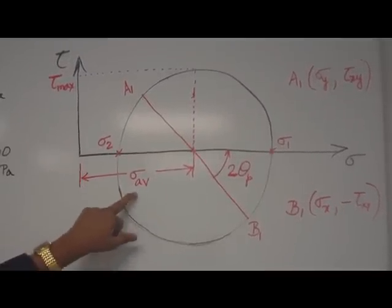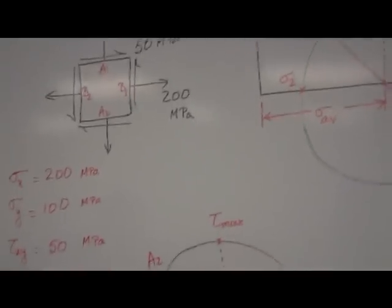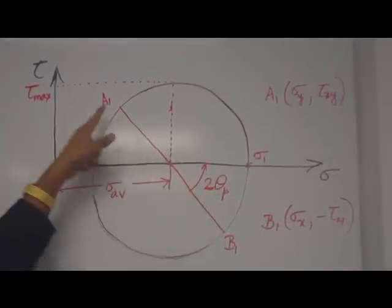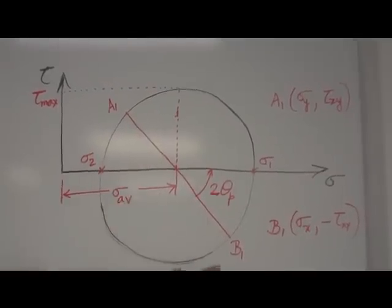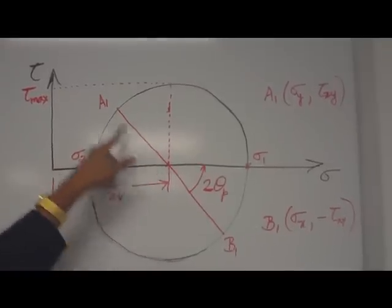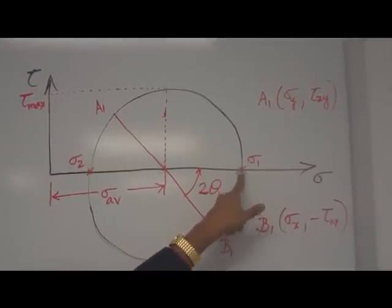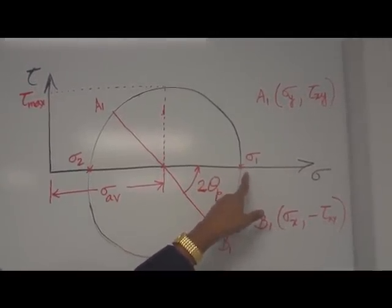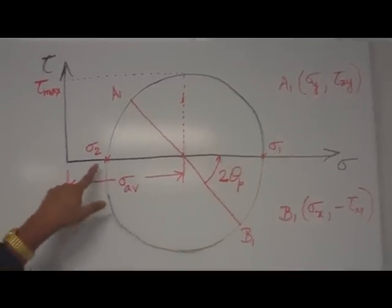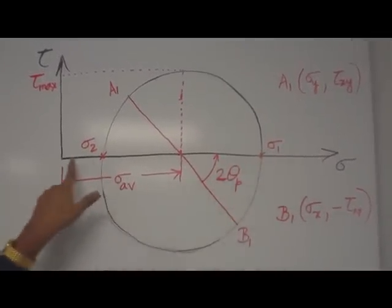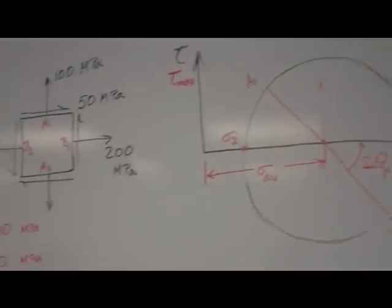The center of the circle is given by sigma average, which is one half of (sigma x + sigma y) — equal to 150 MPa in this case. So you locate the center, and knowing the coordinates of both ends of the diameter, A1 and B1, you can easily draw the circle with center-to-A1 as the radius. Wherever the circle intersects the horizontal axis, the maximum value is called sigma 1 and the minimum value is sigma 2 — those are the principal stresses. Along this axis, shear stress is zero, which is why on the rotated element there is no shear stress. The angle is equal to 2 theta p.